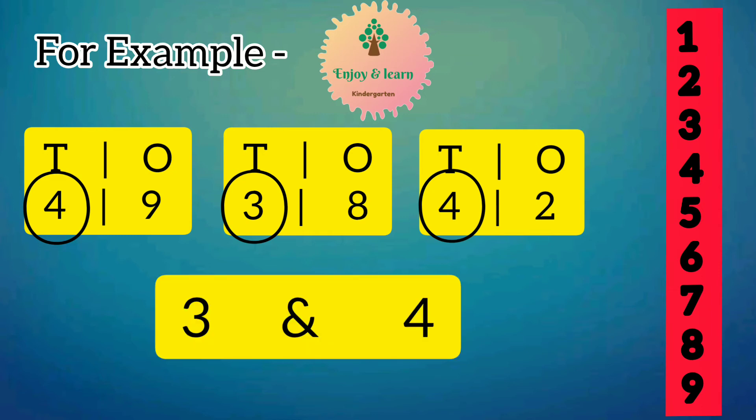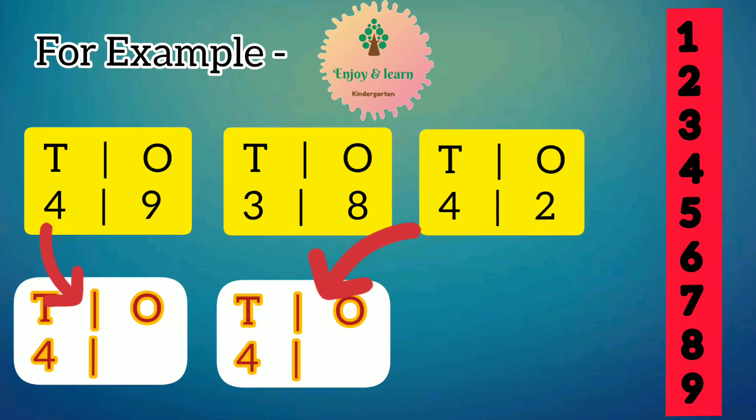Among number 3 and 4, 4 is the greatest. So at first and second place we will write number 4 at tens place, and the remaining number 3 will be at third place.